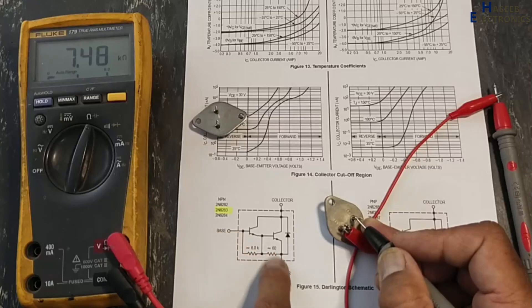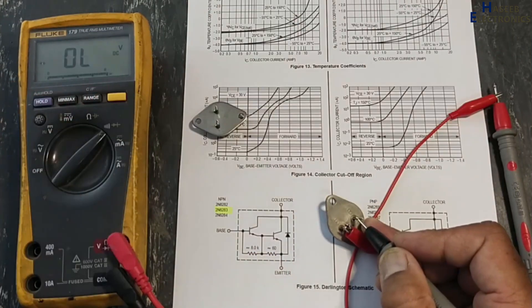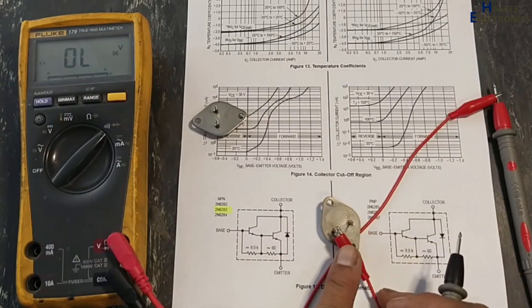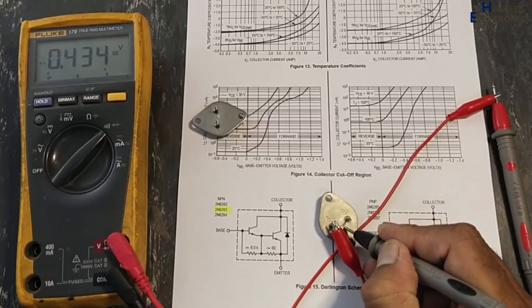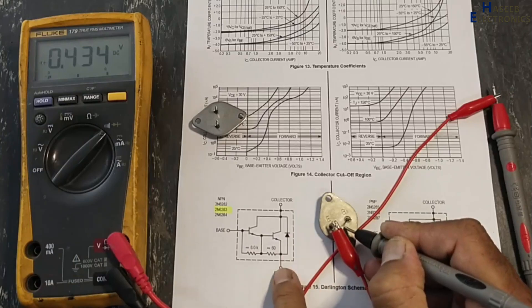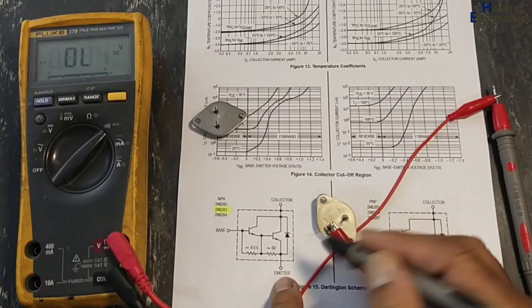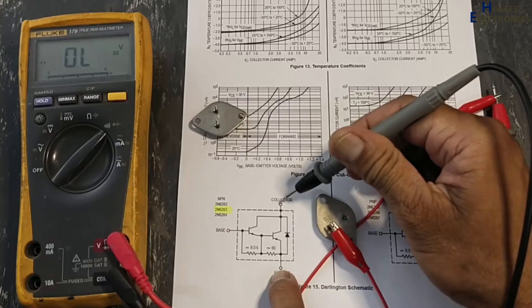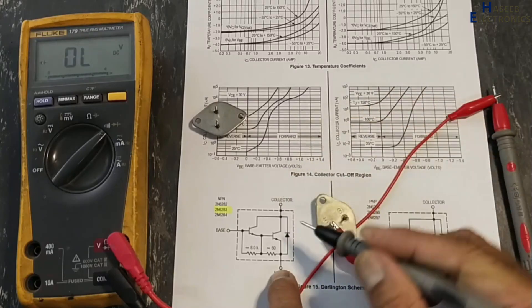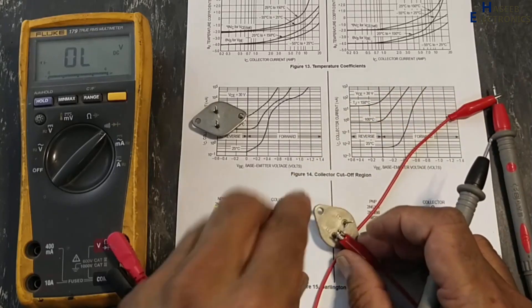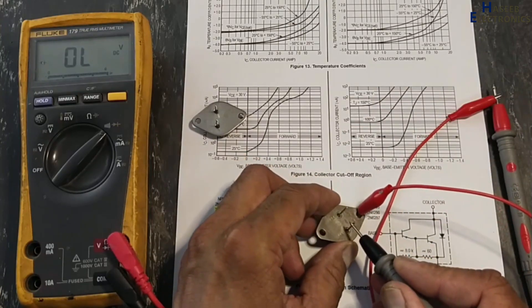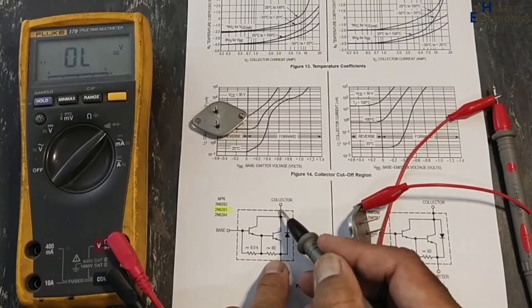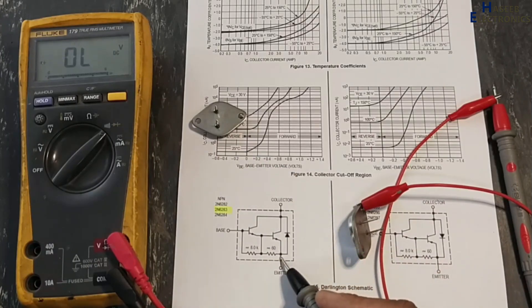Back to diode, open. Now red lead at emitter, black lead at collector. We are testing this diode, 0.434. Now red lead at collector, black lead at emitter. This diode is reverse biased and this transistor is open circuit, so this transistor is good.